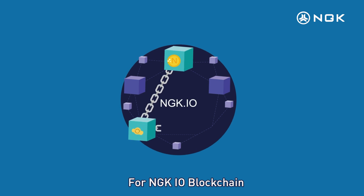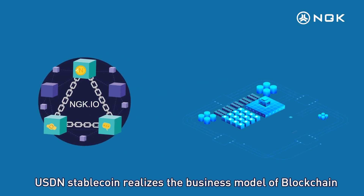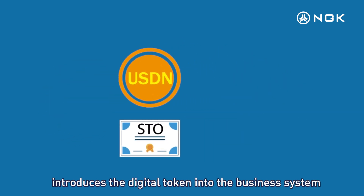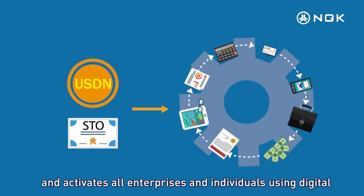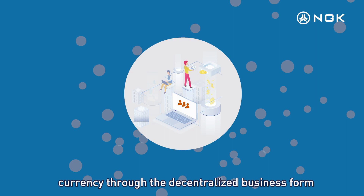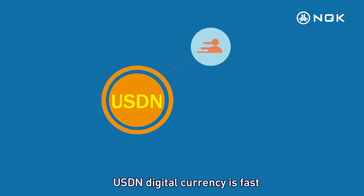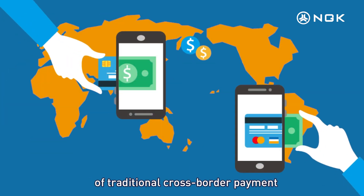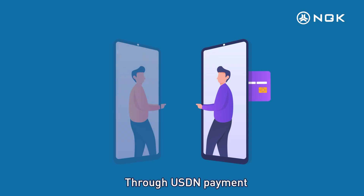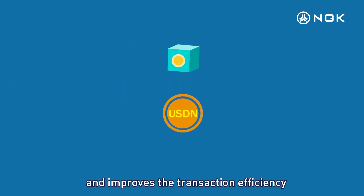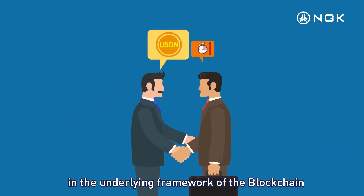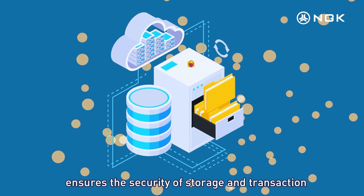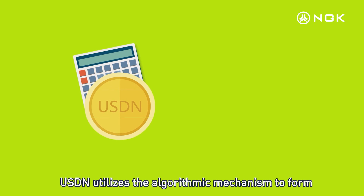USDN is an algorithmic stablecoin for NGK.IO blockchain. USDN stablecoin creates a blockchain business model, introducing digital tokens into the business system and activating enterprises and individuals using digital currency through decentralized business forms. USDN digital currency is fast, economical, and secure, solving the malpractice of traditional cross-border payments.